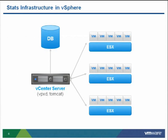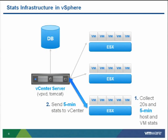Let's dive into how the performance charts and stats infrastructure work in vSphere. The ESX host collects statistics every 20 seconds and stores them locally. Every five minutes, it rolls up that data and also stores it locally on the host for up to one half hour. Periodically, roughly every 15 minutes — staggered between hosts — the five-minute statistics are sent to the vCenter server, which acts as a pass-through and sends them directly to the database.